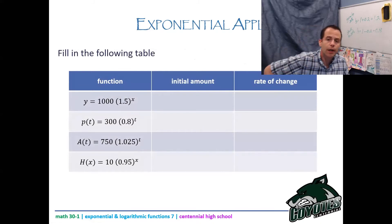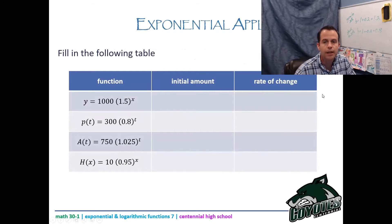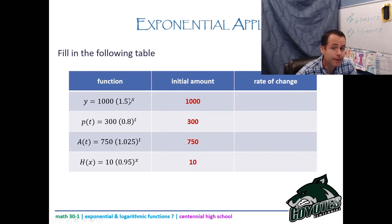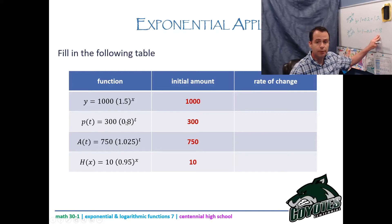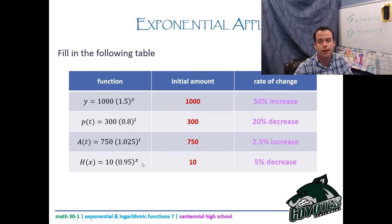Now let's practice. I've given you four different equations — pause me and identify the initial amount and the rate of change for each. Write the rate as a percent and say whether it's growth or decay. The initial amounts (a values) are 1000, 300, 750, and 10. Their rates are: 50% growth, 20% decay, 2.5% growth, and 5% decay.